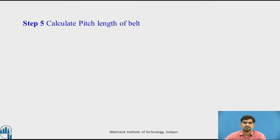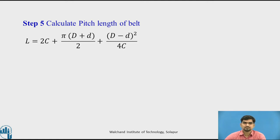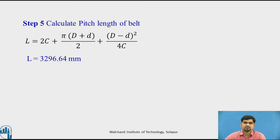Step 5: calculate the pitch length of the belt. Since the application is for an open belt drive, we use the equation: L = 2C + π(D + d)/2 + (D − d)²/4C. Using the known center distance and the diameters of the smaller and bigger pulleys, we get L equal to 3296.64 mm.